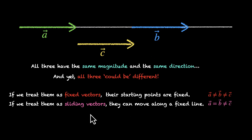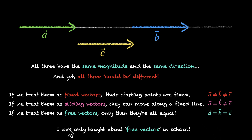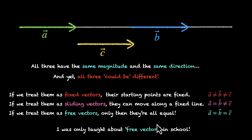And here comes our third category. If we treat them as free vectors, only then they're all equal. If they're free vectors, you can just put A vector on top of C vector — they have the same magnitude and the same direction — and you can do that with B vector as well. So all three vectors are equal. In school, I was only taught about free vectors; I didn't know that fixed vectors and sliding vectors also exist. Depending on which type of vectors we're dealing with, we can call these three equal or not equal. For this chapter, we'll be mostly dealing with free vectors.